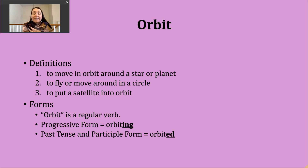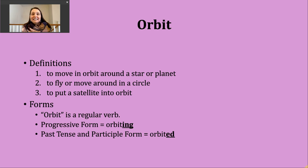You should know that orbit is a regular verb. To make the progressive tense, all we're going to do is add -ing to form orbiting. The past tense and participle forms are made by adding -ed. Our base verb orbit ends in a T sound, so our past tense ending is going to make an -id sound and add an extra syllable: orbited.